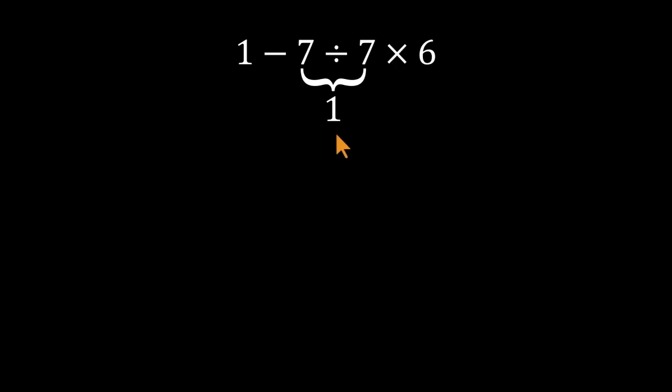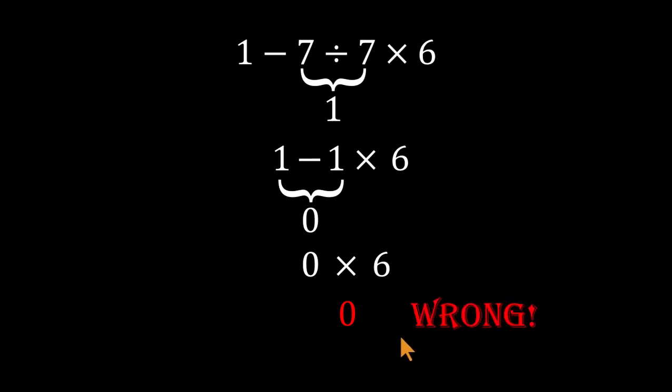So now the expression becomes 1 minus 1 times 6. Next, they go left to right. 1 minus 1 equals 0. Then 0 times 6 equals 0. The process feels smooth. Everything checks out until you realize the answer's way off.